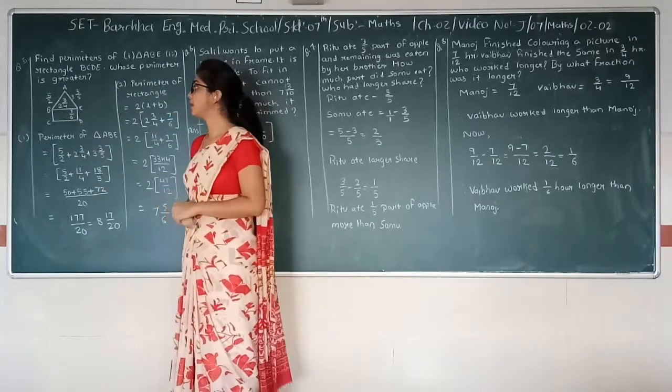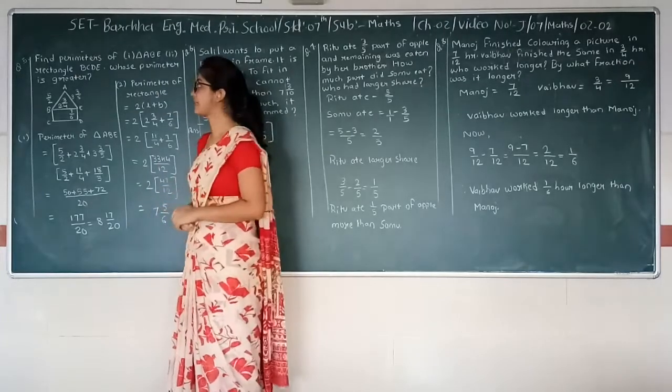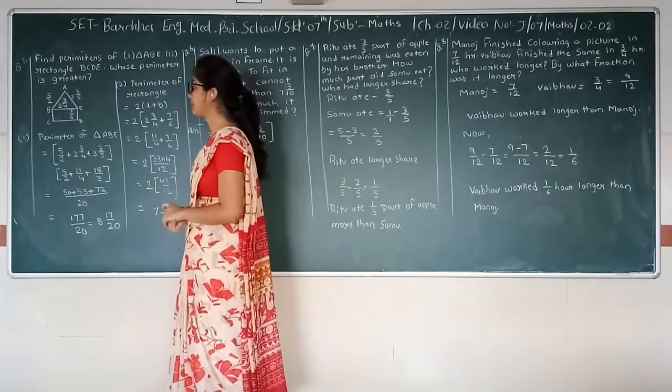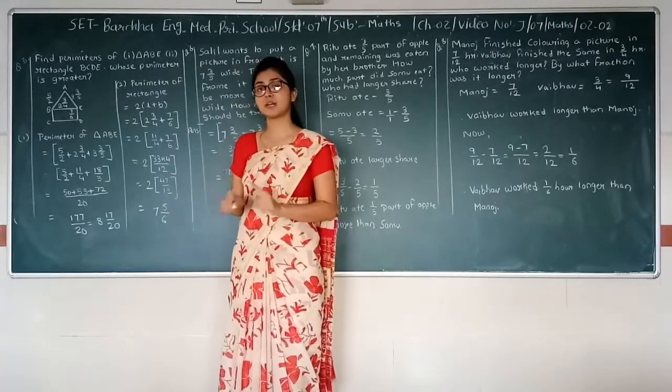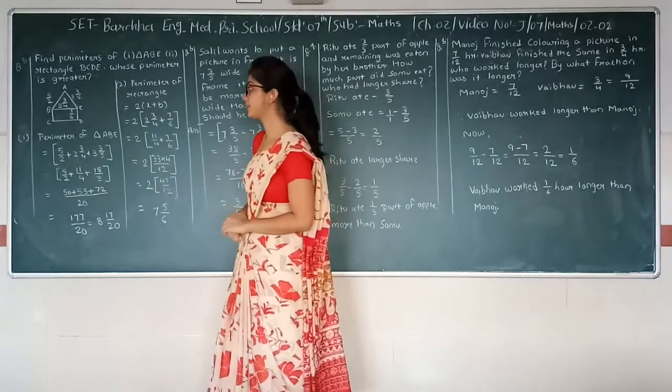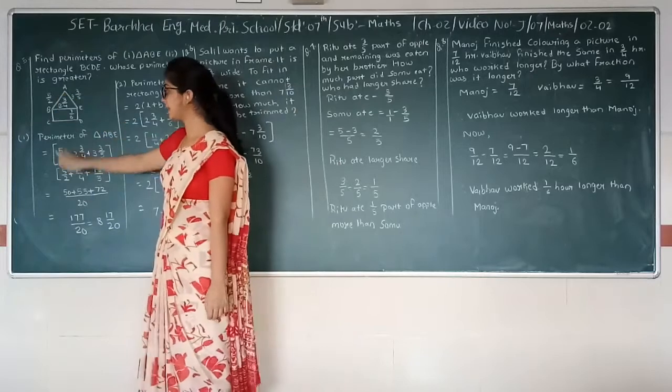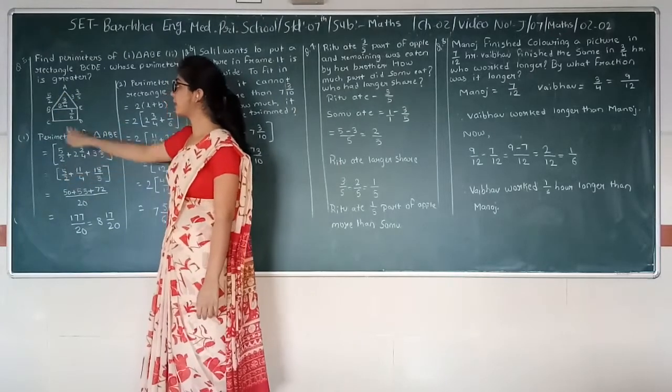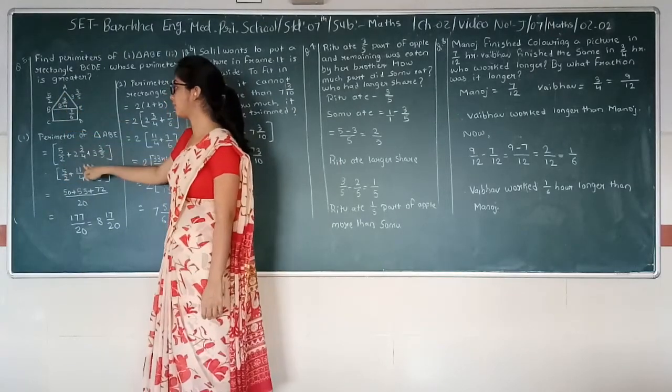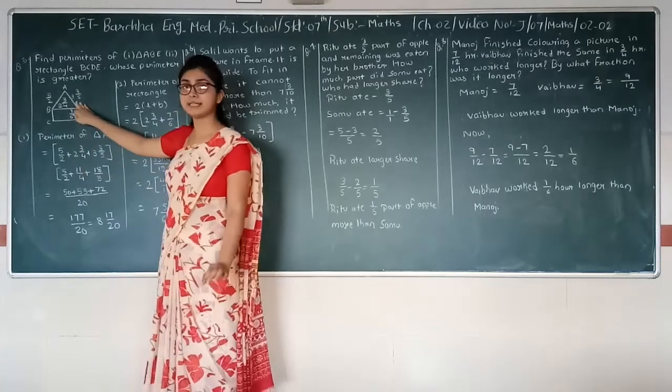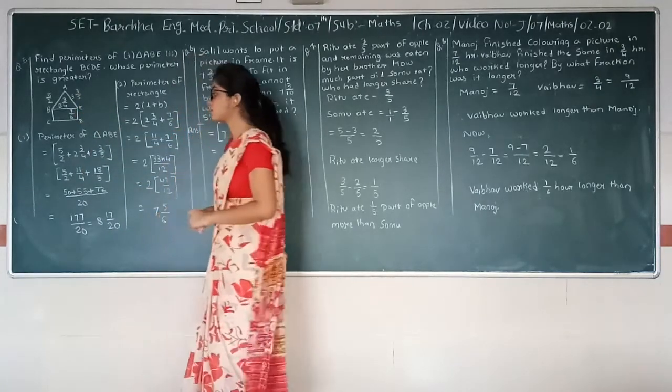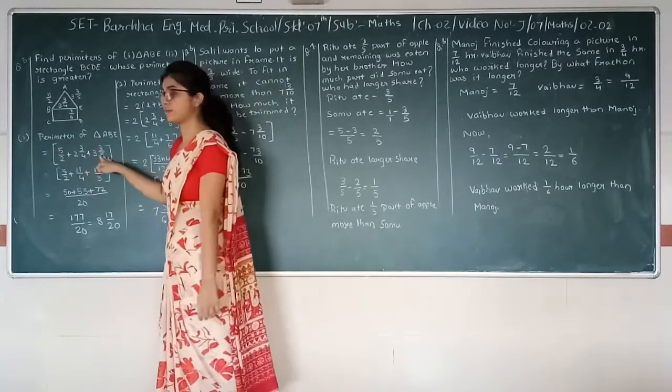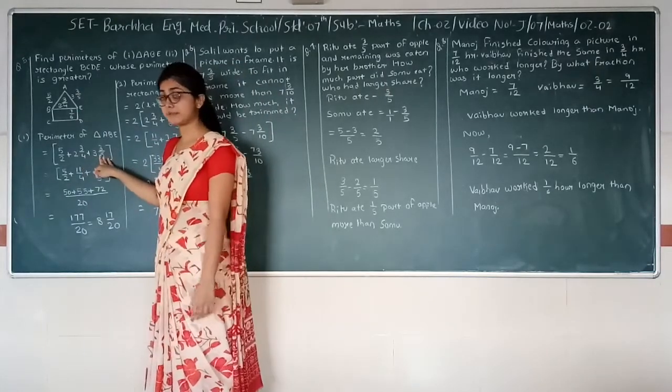So parameter of triangle ABC, for that we will need sides, it means sum total of all the three sides. First one is 5 about 2, second one is 2 integers 3 about 4, and for the last one is 3 integers 3 about 5. So we have mixed fractions of all. Here first of all we need to convert into improper fraction.